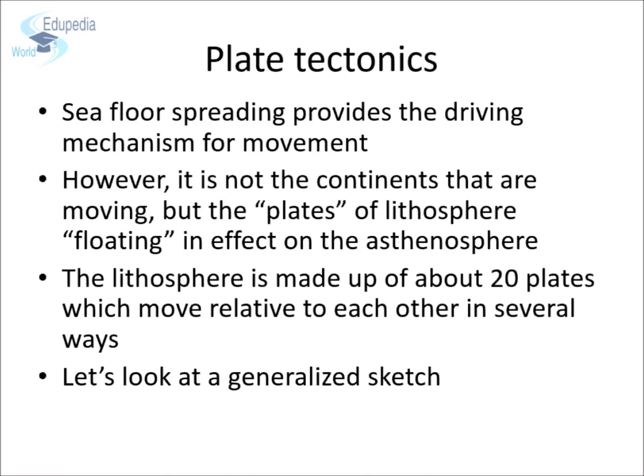Think about two cars moving around a parking lot. In what three ways can those cars move relative to each other? They can move away from each other, they can move towards each other, or they can slide past each other. These three types of relative motion also define the three types of plate boundaries. According to plate tectonics, it is clear that the continents themselves are not moving — instead, these lithospheric plates, the pieces of Earth's crust, are moving. They are floating on the asthenosphere. The lithosphere is made up of around 20 big plates, which move relative to each other in those three ways.